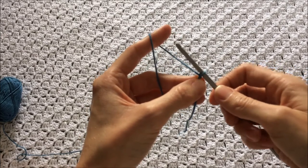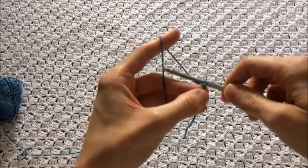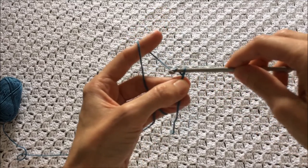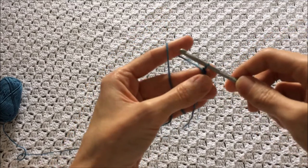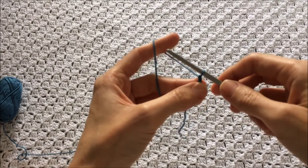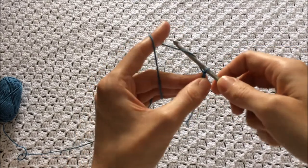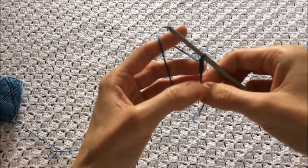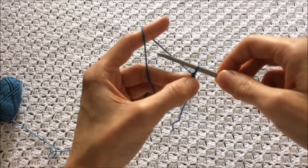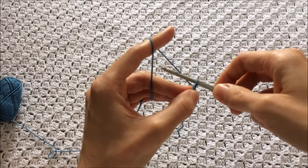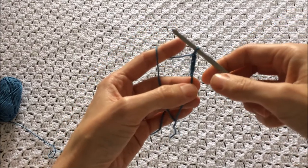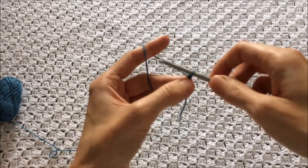So to make a chain, you need to pass your hook in front of the yarn, catch the yarn, and then pull it through the loop on the hook. So pass the hook in front of the yarn, catch the yarn, then pull it through the loop on the hook. Pass the hook in front of the yarn, catch the yarn, and bring it through the loop on the hook. I'm just going to do that a few more times.